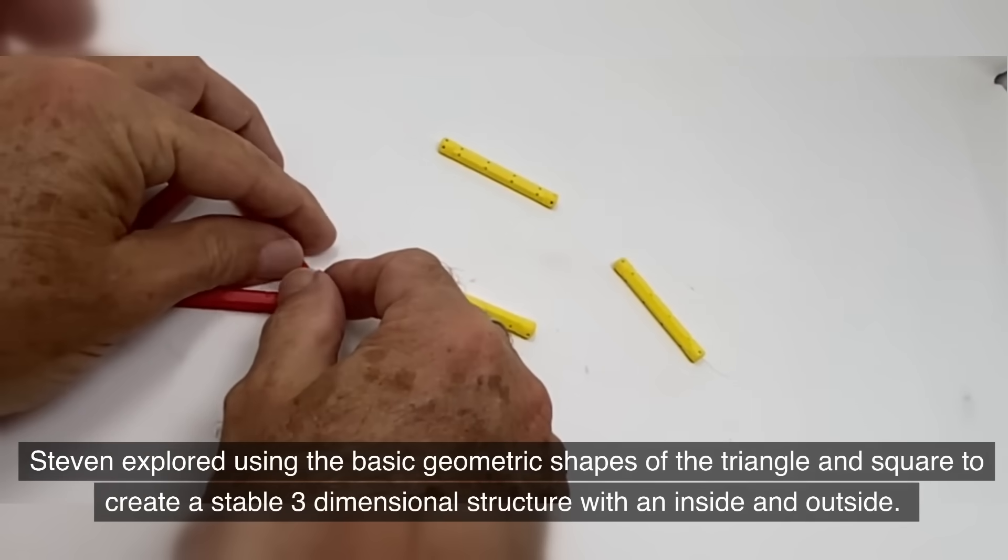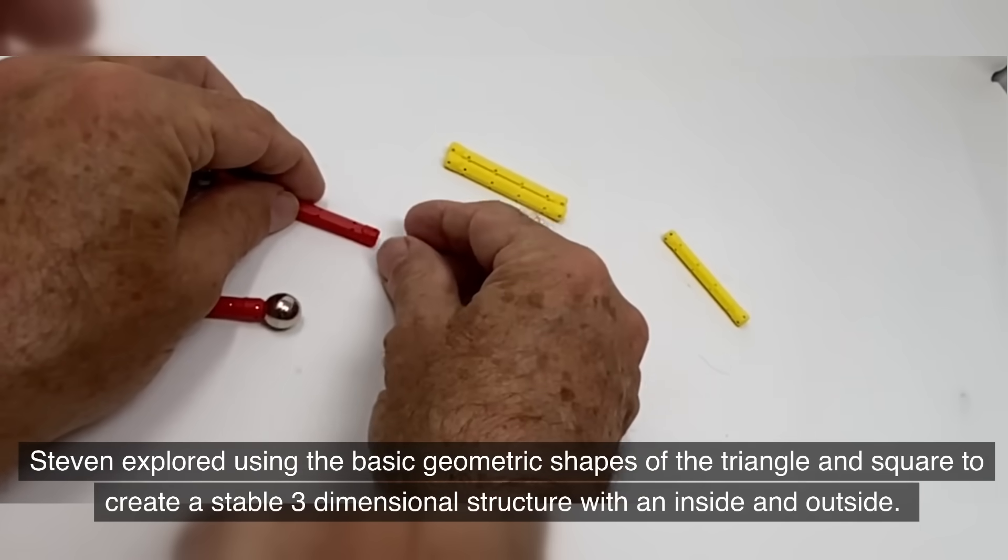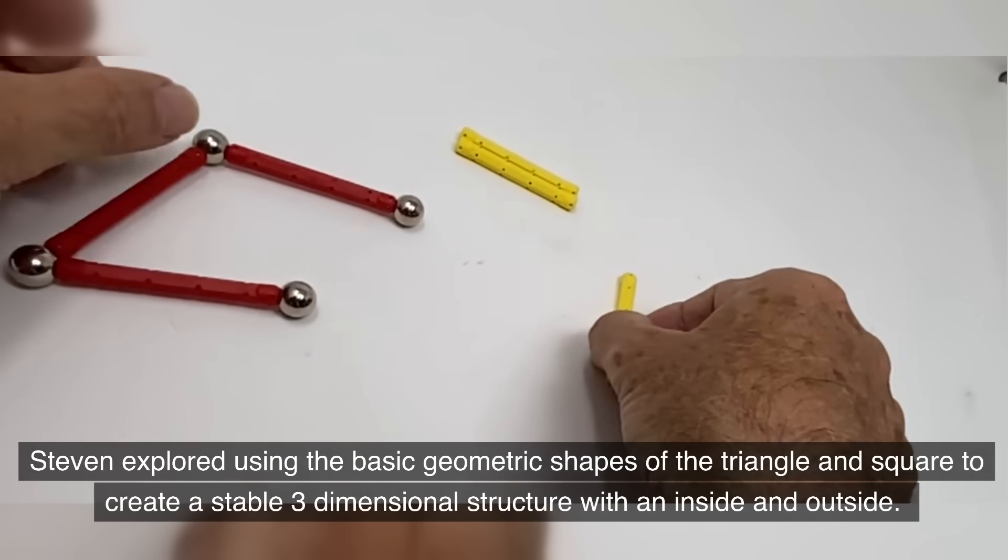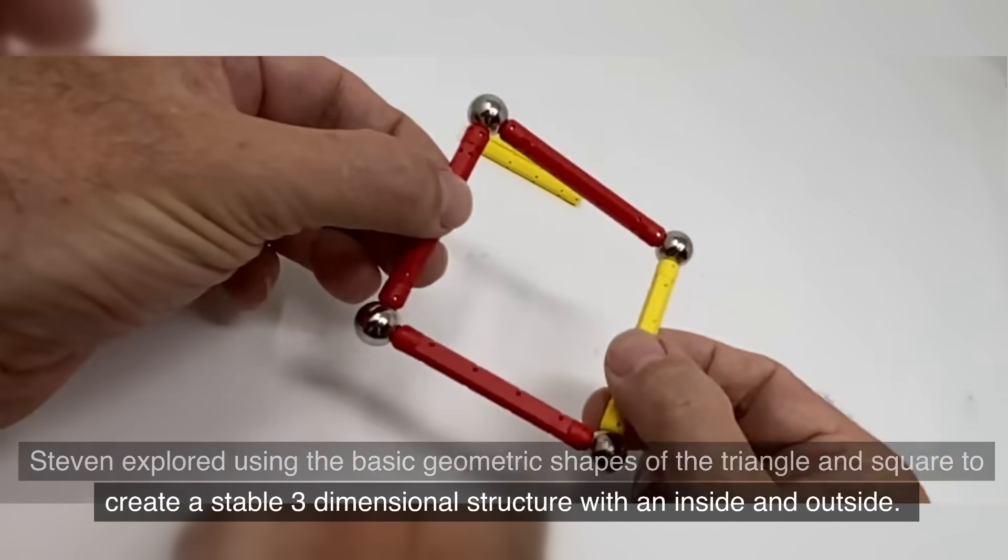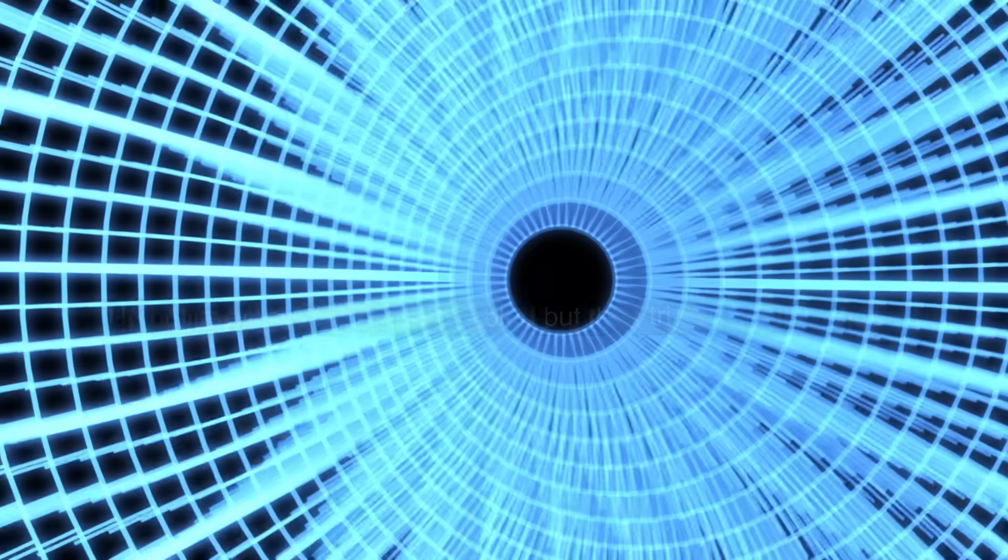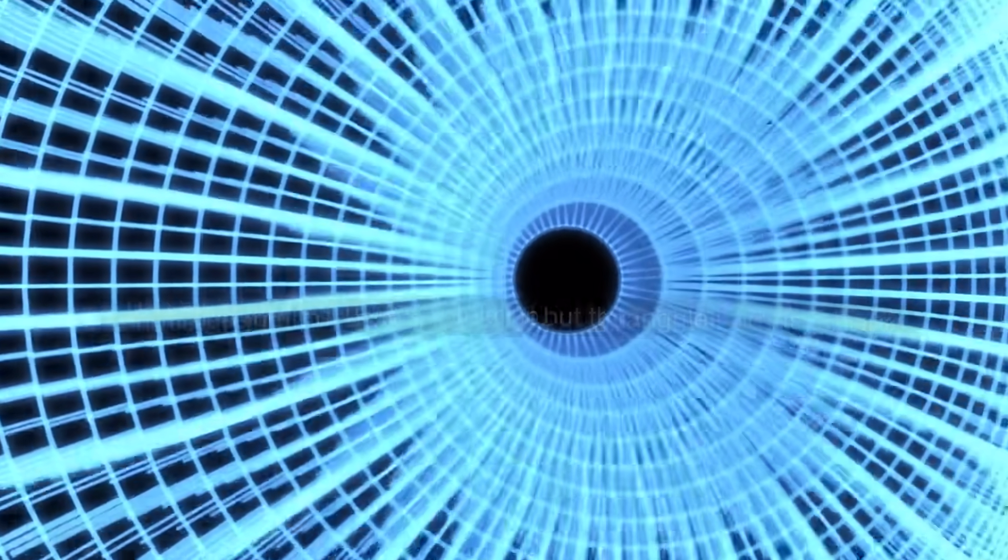Stephen explored using the basic geometric shapes of the triangle and square to create a stable three-dimensional structure with an inside and outside. He noticed that the square wobbled, but the triangle held its shape.